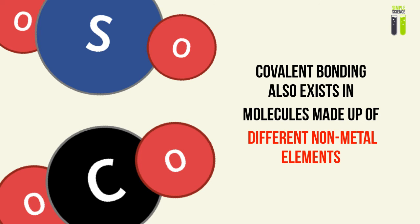Covalent bonding is not just found in single non-metal elements. A covalent compound can be made up of many types of elements, such as carbon dioxide, sulfur dioxide, or even something more complex like methanol. It's a covalent bonding structure which has many different non-metal elements.